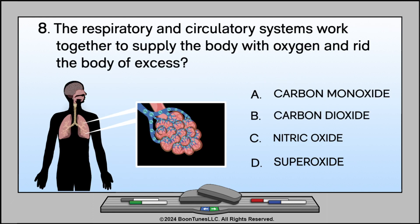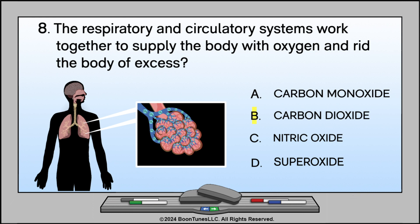The respiratory and circulatory systems work together to supply the body with oxygen and rid the body of excess: A. Carbon monoxide. B. Carbon dioxide. C. Nitric oxide. D. Superoxide. The answer is B. Carbon dioxide.